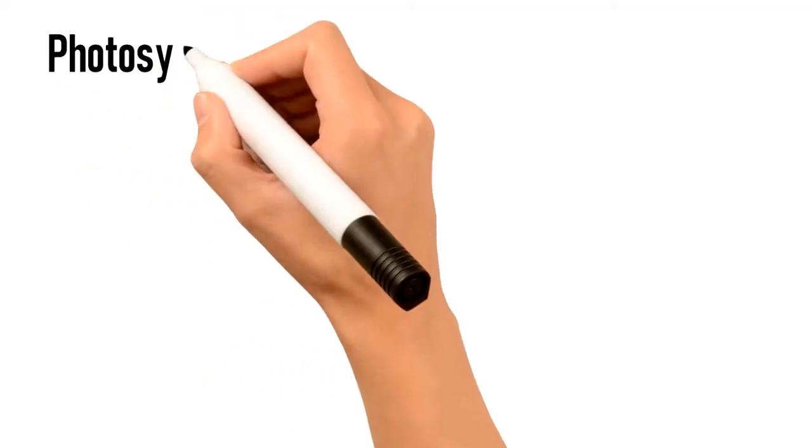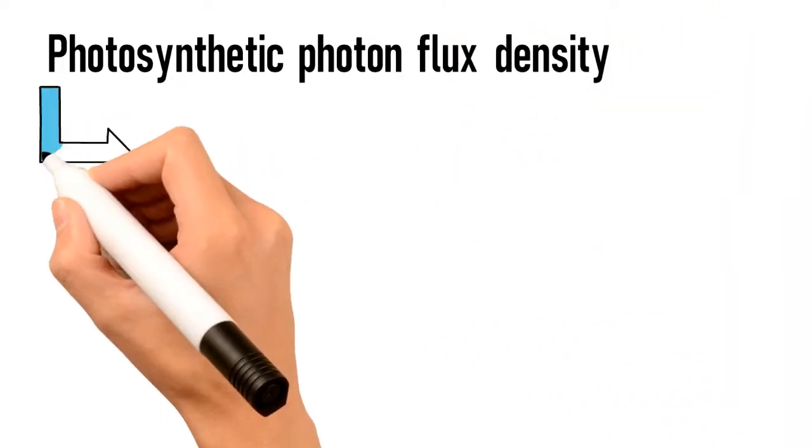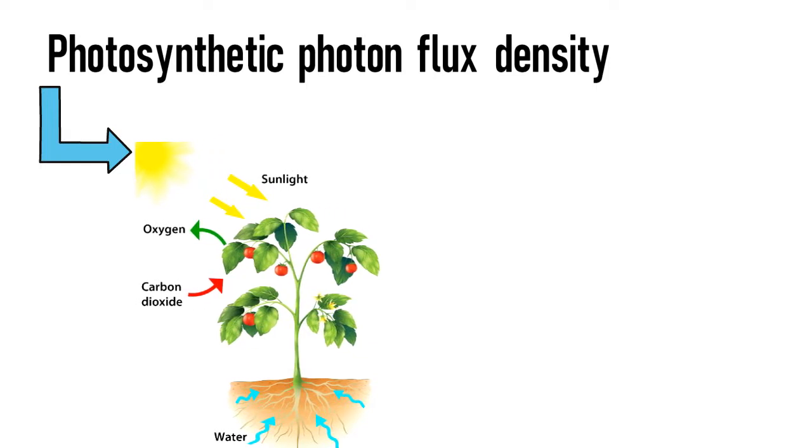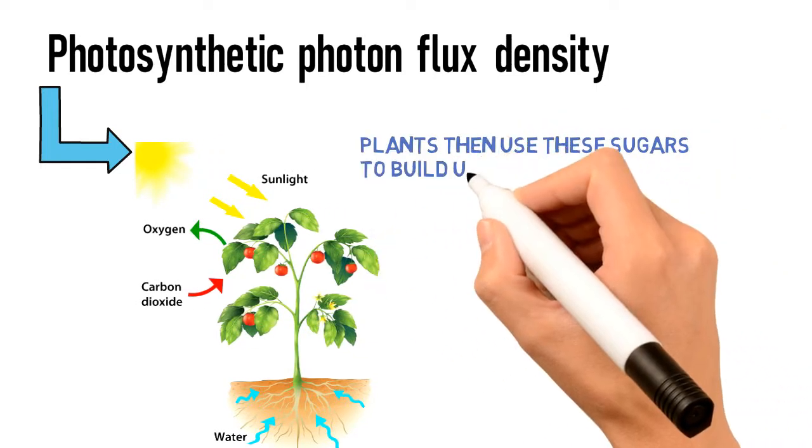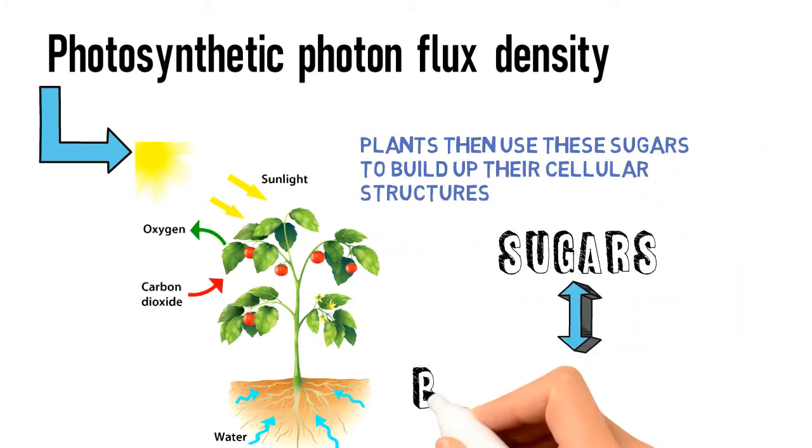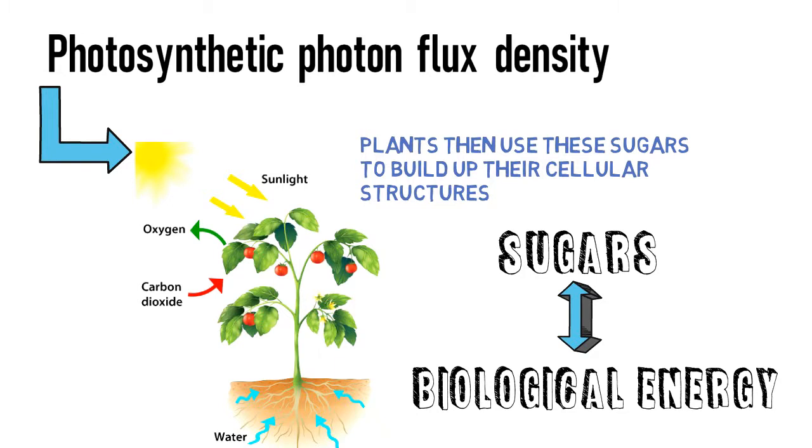PPFD stands for photosynthetic photon flux density. The first P stands for photosynthetic, which is the process by which plants use light to generate their own sugars. Plants then use these sugars to build up their cellular structures. Sugars are also converted into biological energy to stay alive and grow.